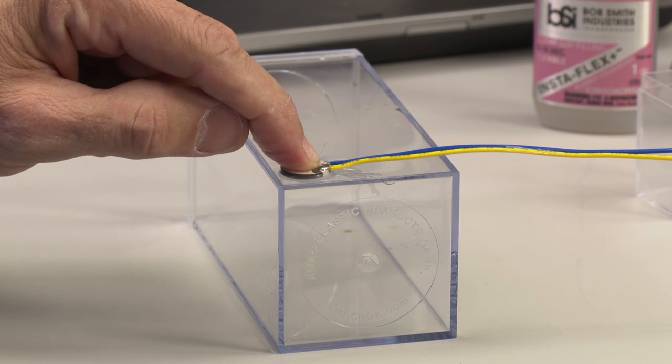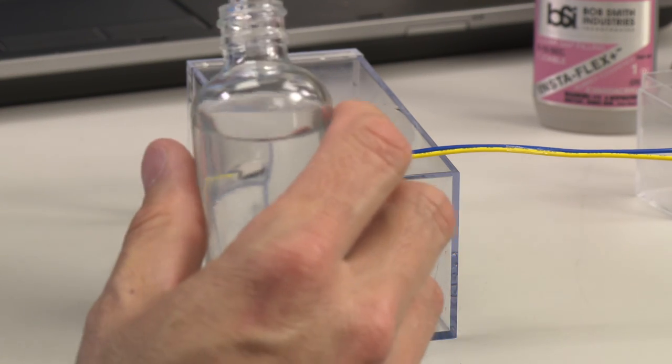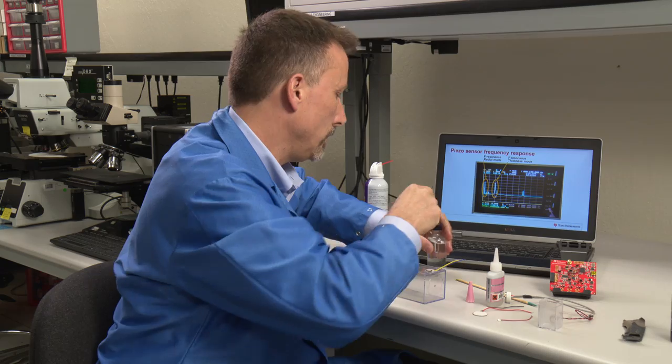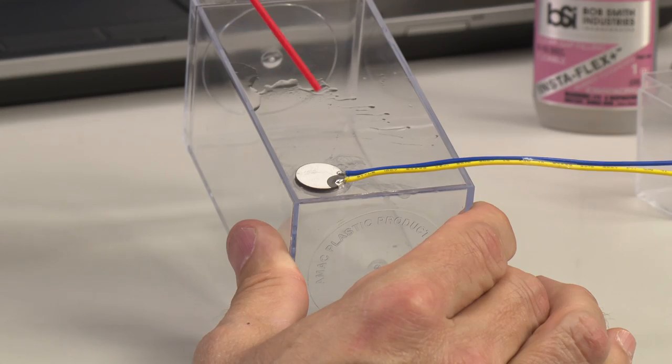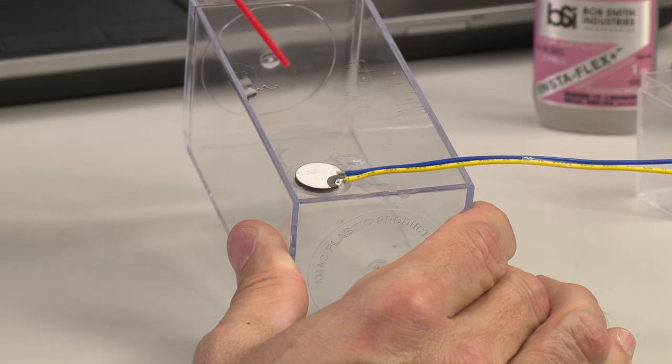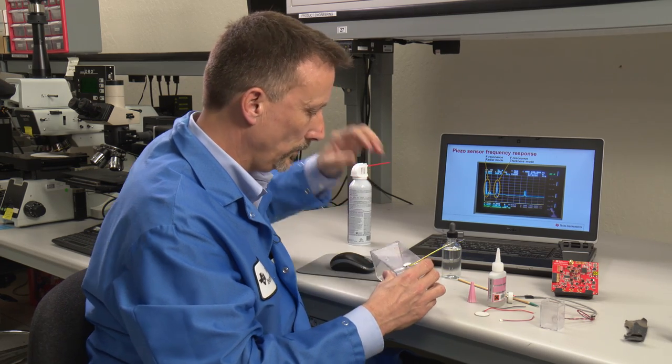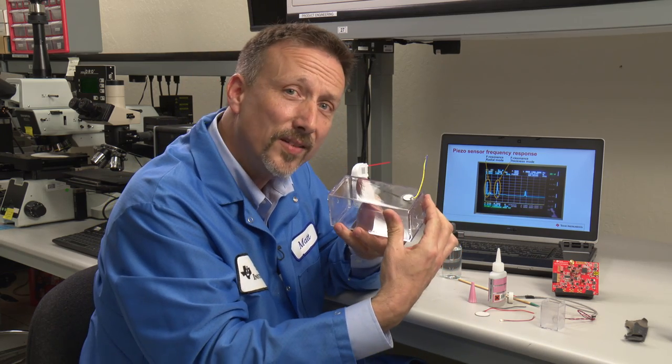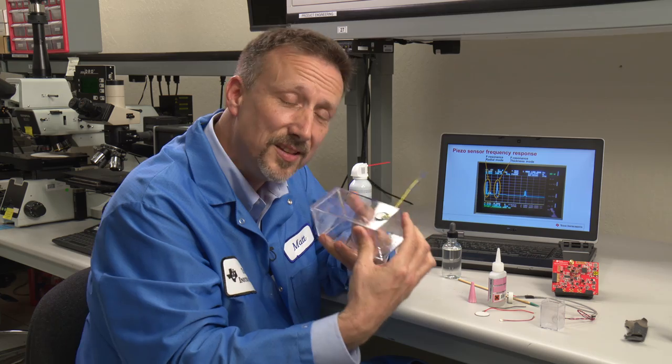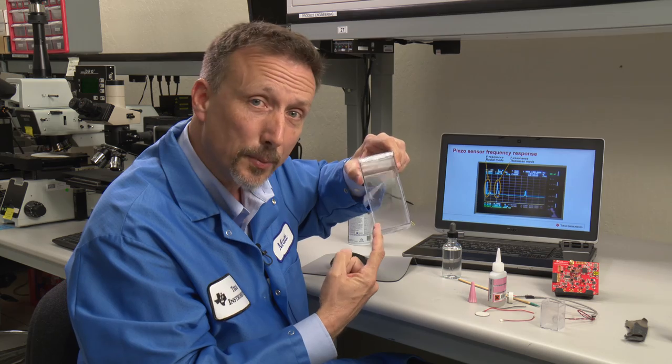Lastly, we'll need to clean with a few drops of alcohol. Again, using air to blow it off. Now I've got a transducer mounted to this container and ready to sense, in this case, fluid identification applications.